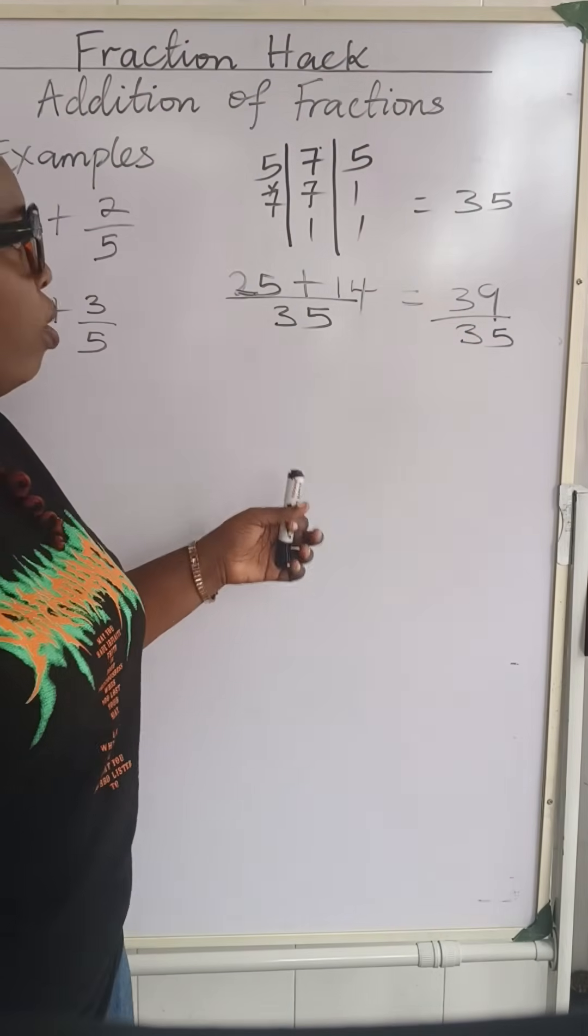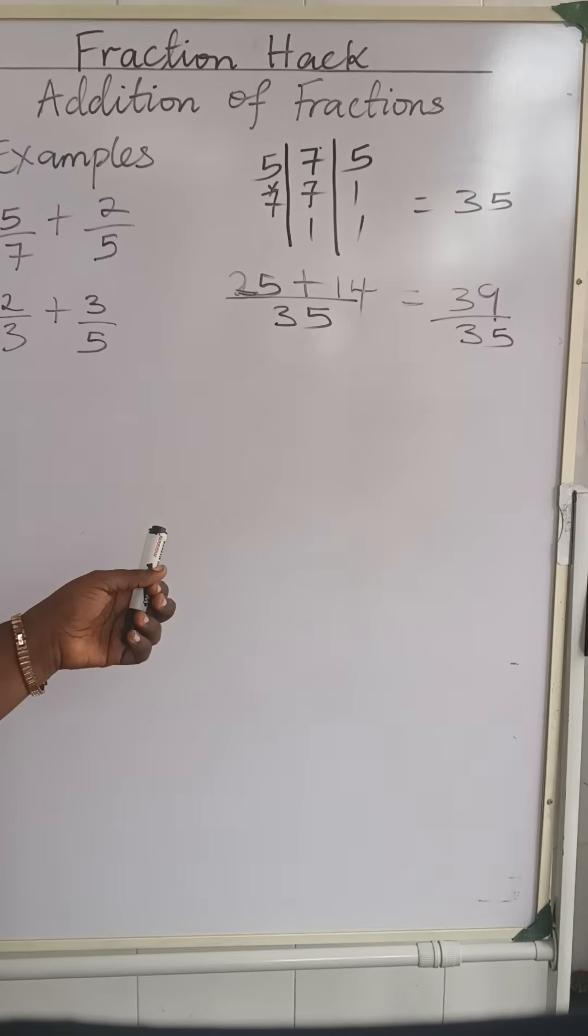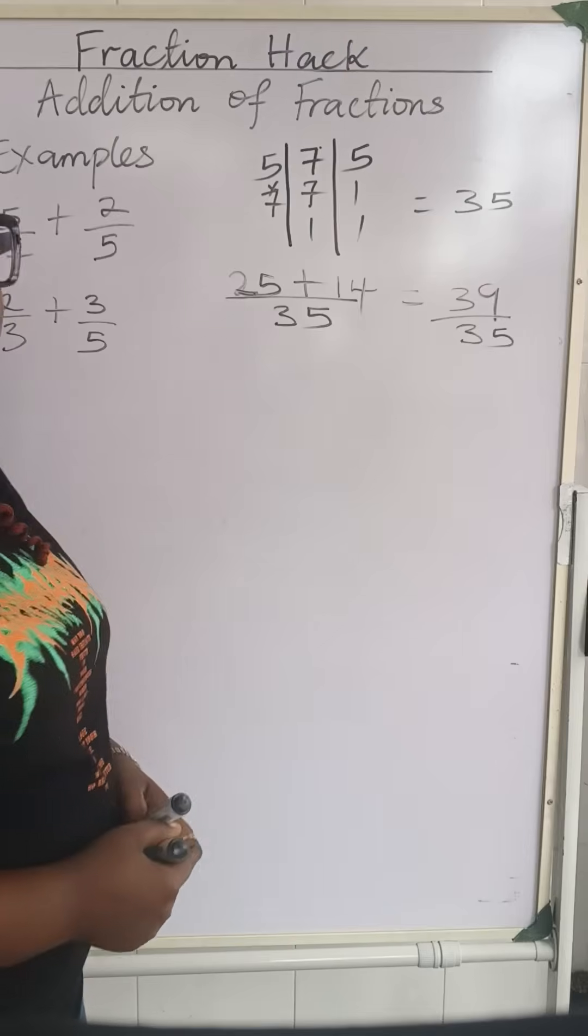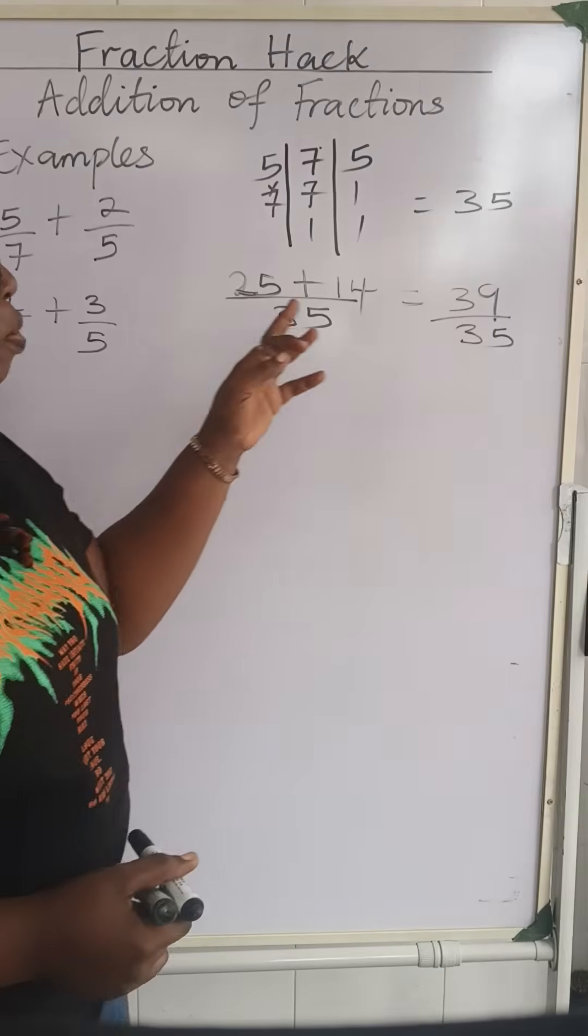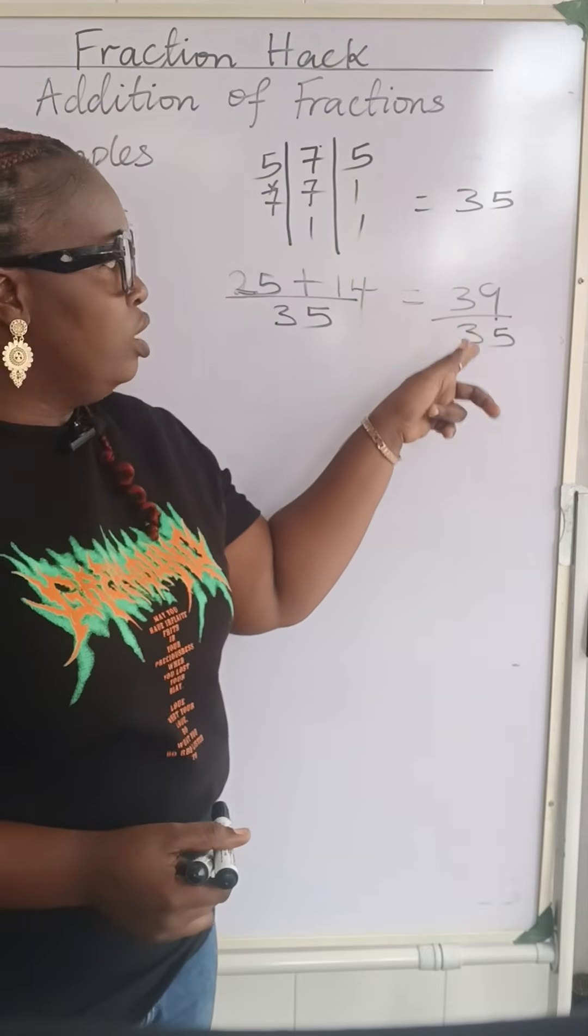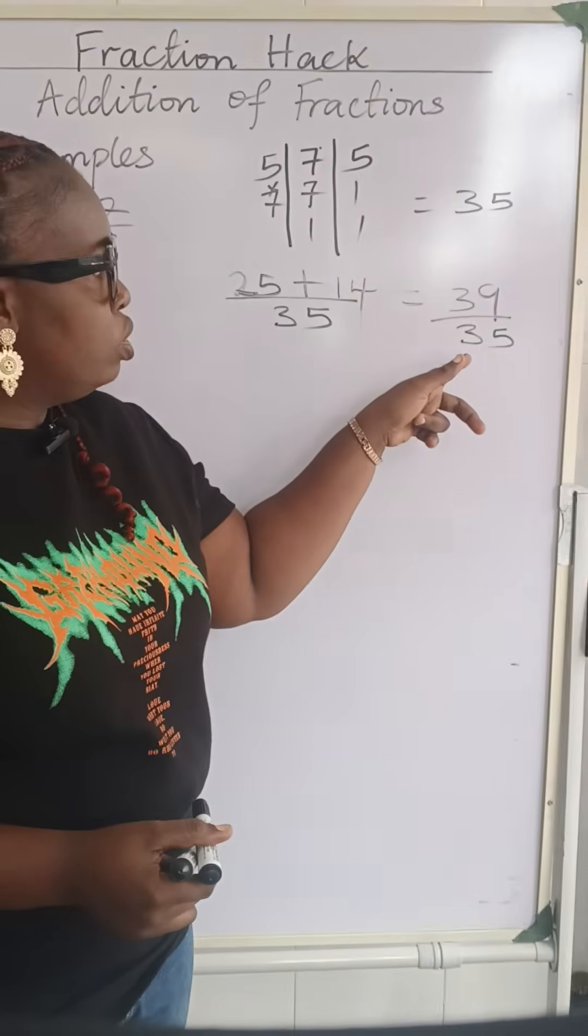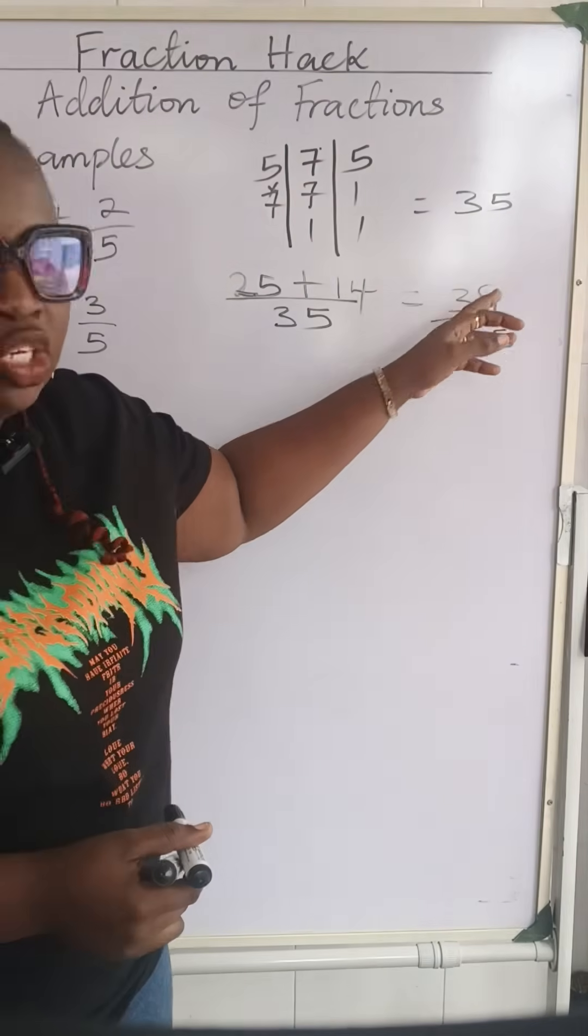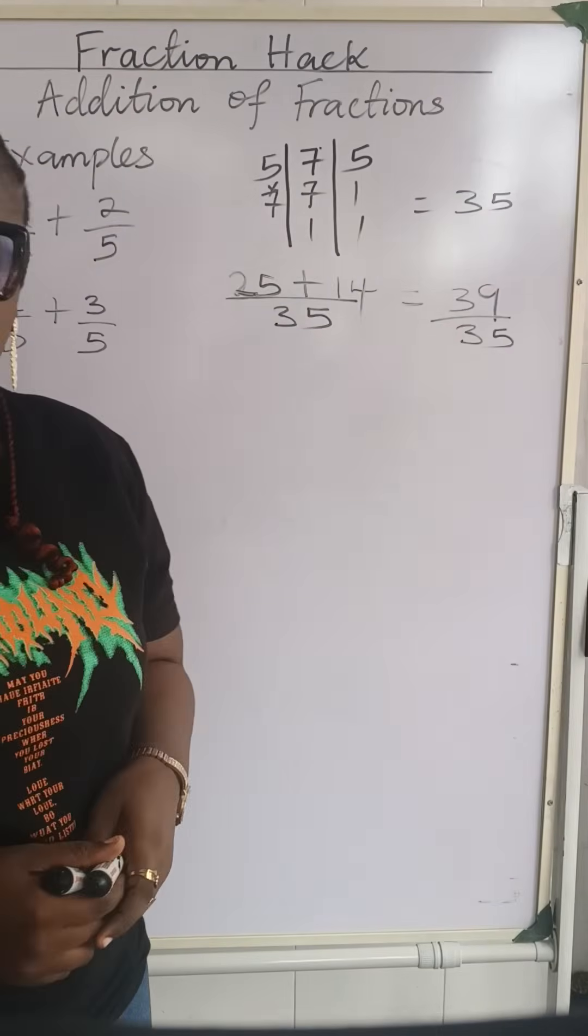39 over 35. Are we going to leave our answer this way? No, because it is an improper fraction. 39 is bigger than the denominator. The numerator is bigger than the denominator, so it's an improper fraction. We will change it to a mixed fraction.